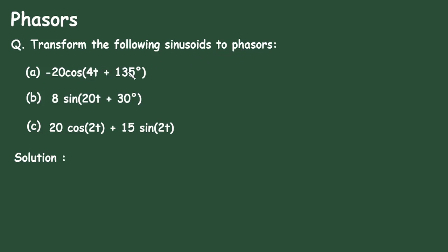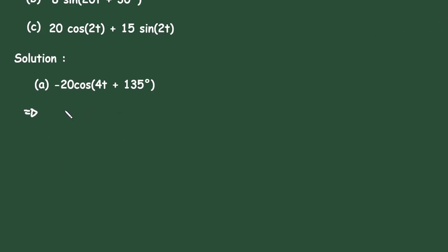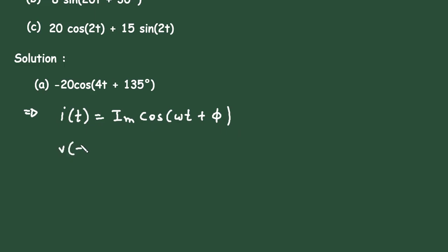We have to convert these sinusoids into phasors. First, the standard form: if it is a current, then I(t) is equal to Im·cos(ωt + φ), and if it is a voltage, then V(t) is equal to Vm·cos(ωt + φ).